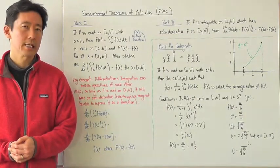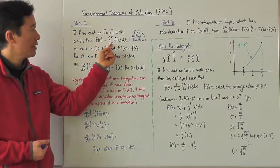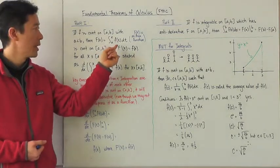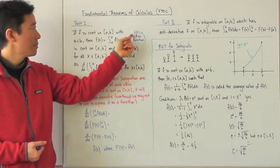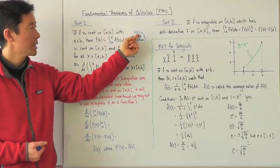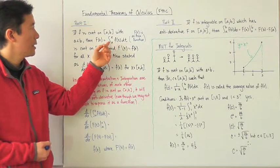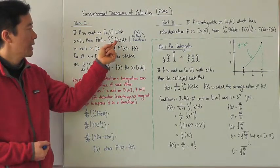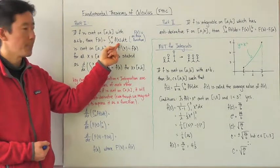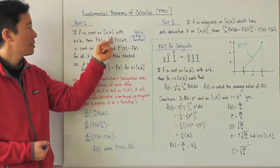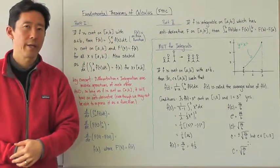Now let's understand exactly what this theorem is producing. This particular part, which is the definite integral, is of course going to provide an area. So what capital F of x is, is really a function that is going to be describing the amount of area that is going to be bounded by f of t, the x-axis, from a to whatever value of x we choose, that is on the closed interval from a to b.